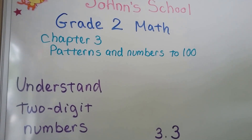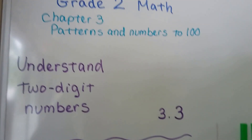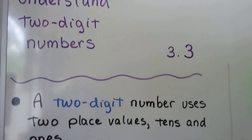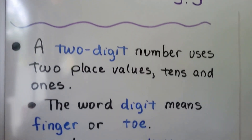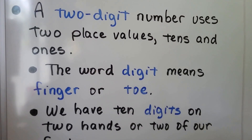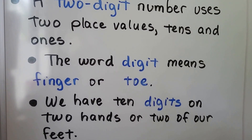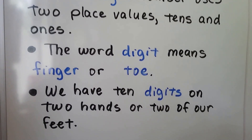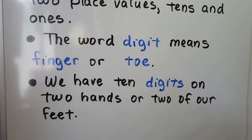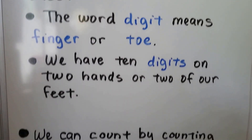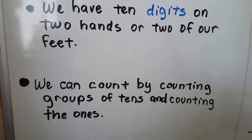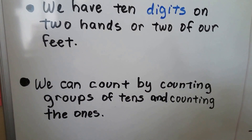Understanding two-digit numbers. A two-digit number uses two place values: tens and ones. The word digit means finger or toe. We have ten digits on two hands or two feet. We can count by counting groups of tens and counting the ones.